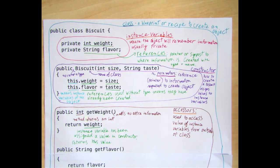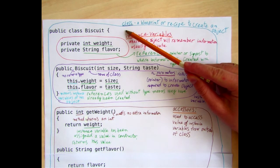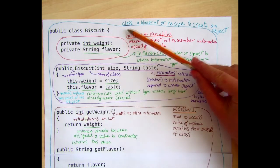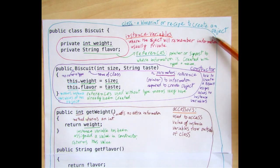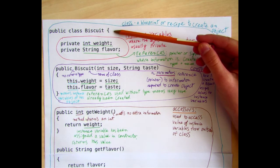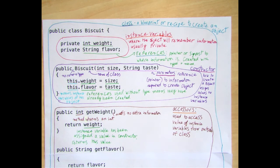All the code we're going to look at today is going to be part of a class. What you have to understand is that a class isn't an object — it's a blueprint or a recipe to create an object. In this case, it's telling the computer everything it has to know about what a biscuit is and how to create a biscuit. It's not an actual biscuit.